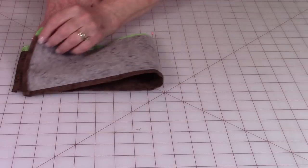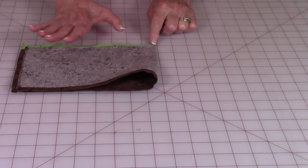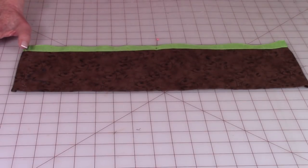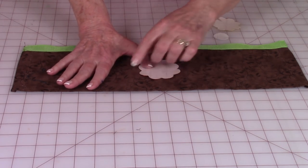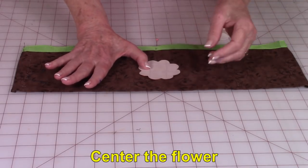Fold the border in half to find the center and then put a pin there to mark it. So now we're going to take the smallest flower and we're going to center it right in this area. So find your center.